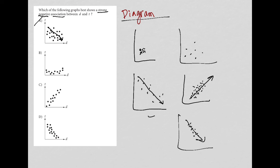Choice B is flat. It's not negative nor positive, although it is a strong association. So that's why B is gone.